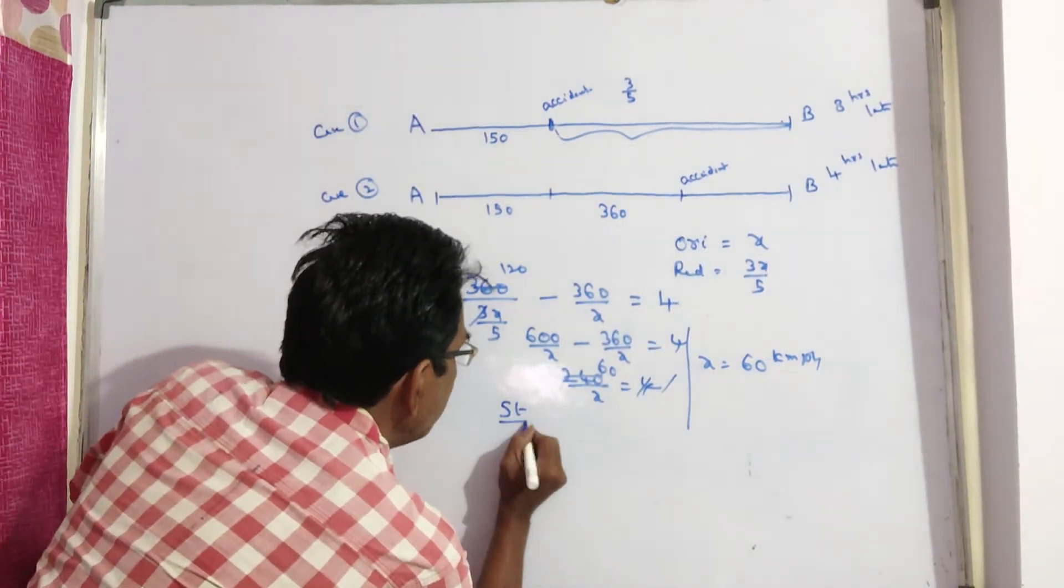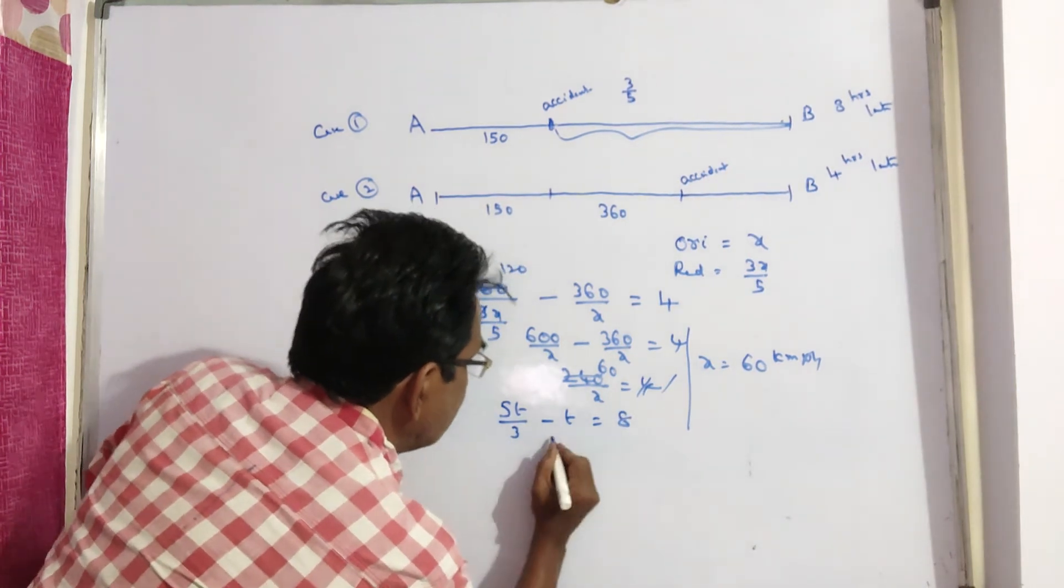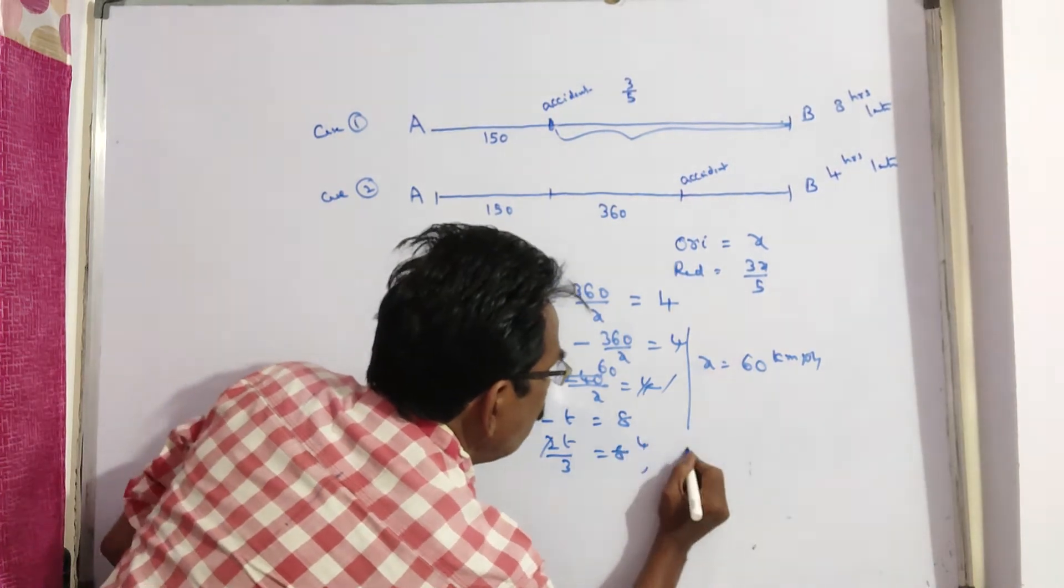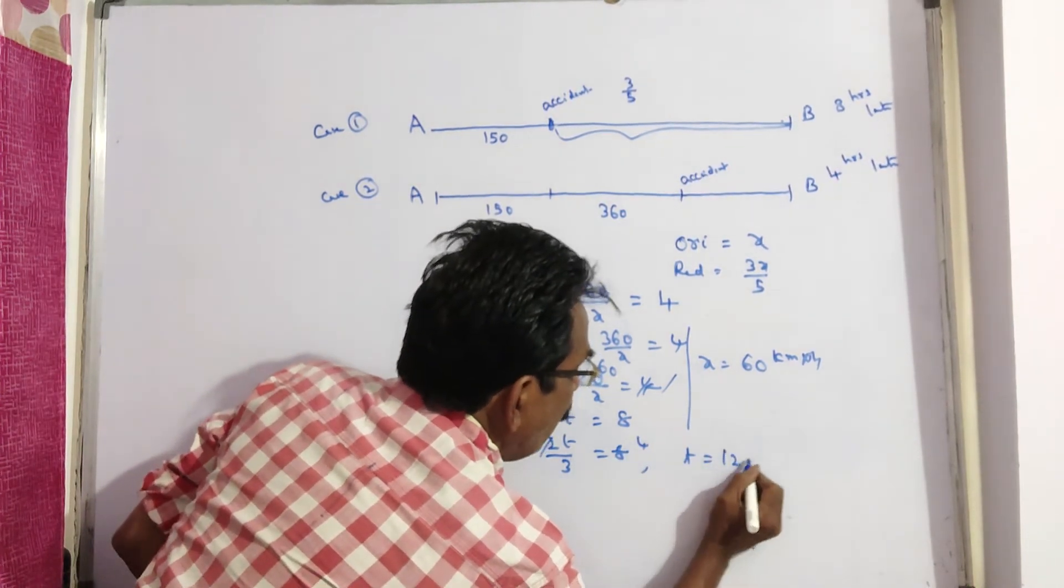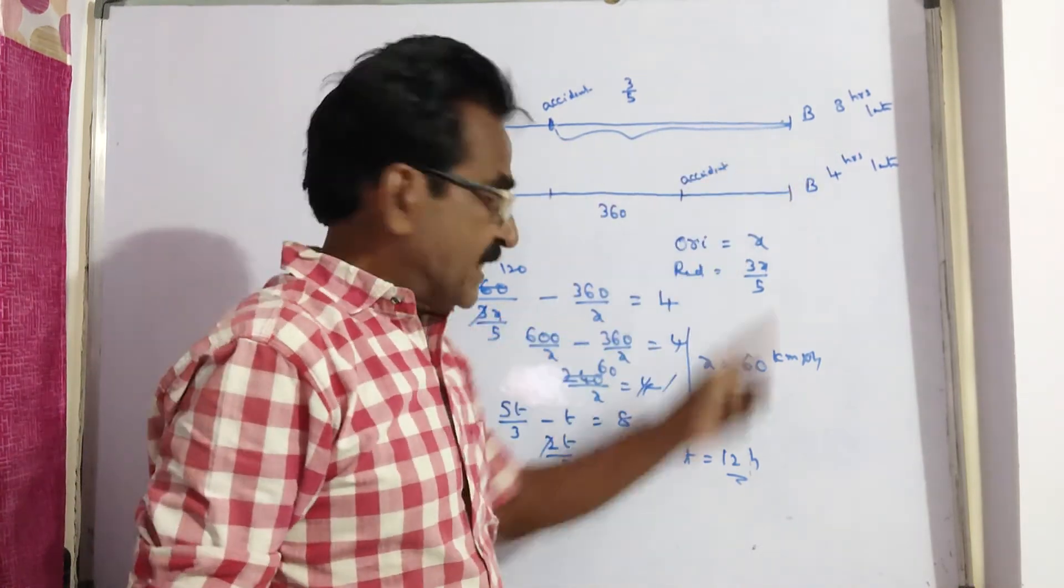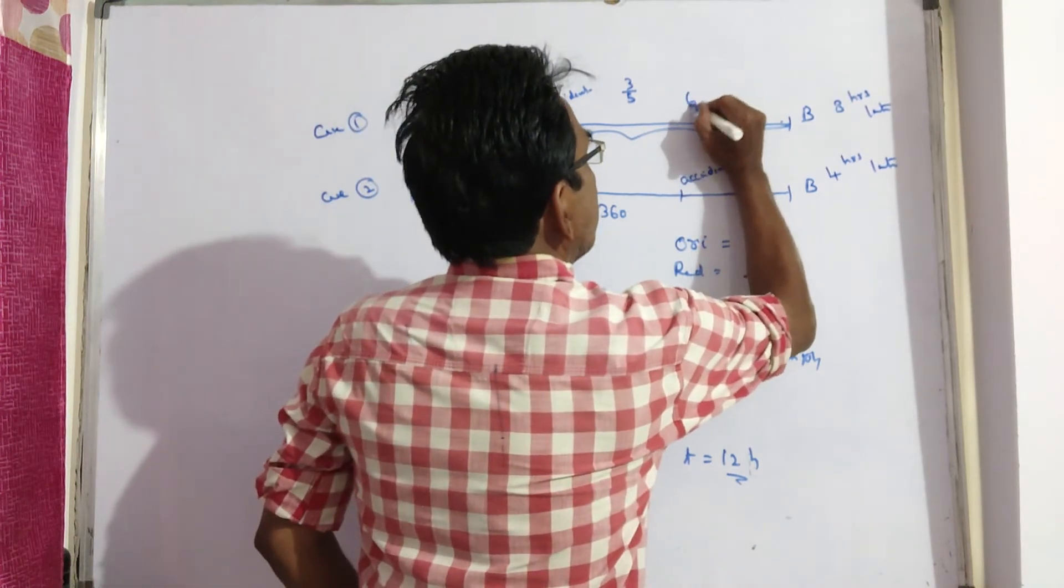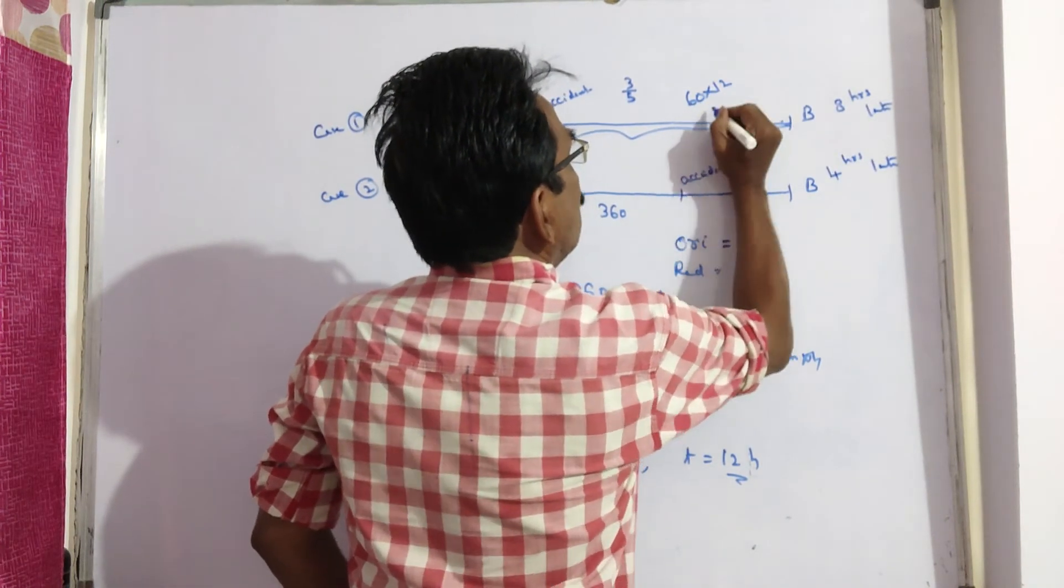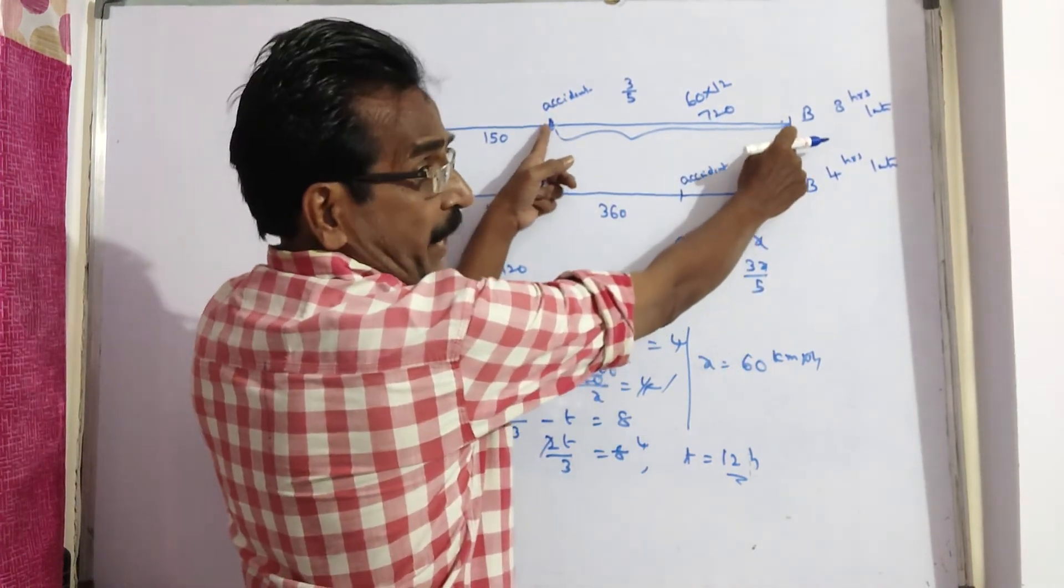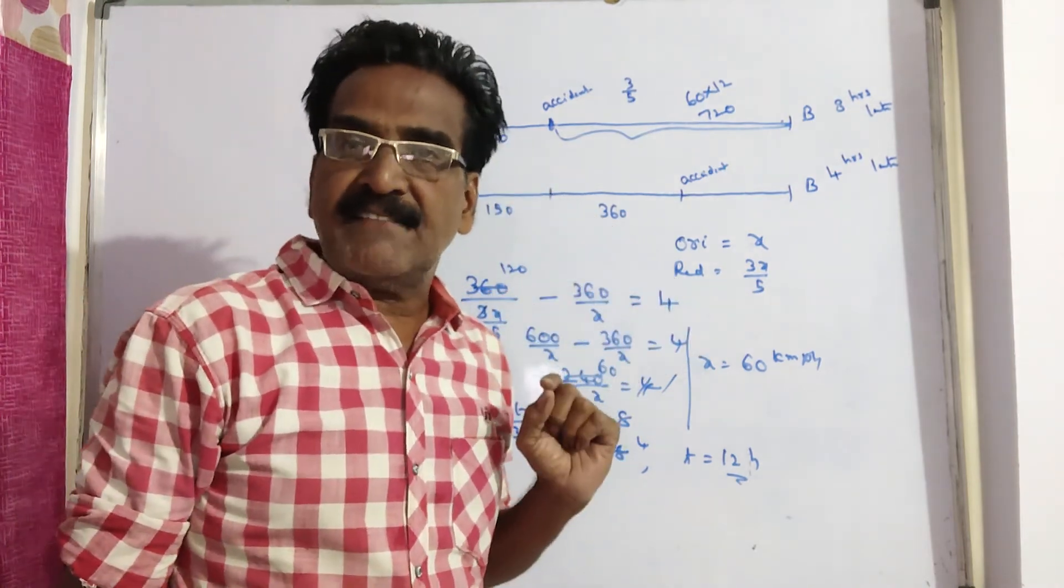So 5t by 3 minus t is equal to 8. 5t minus 3t, 2t by 3 is equal to 8. So t is equal to 12 hours. So if the train travels with usual speed, it takes 12 hours. That means usual speed, we know, 60 into 12 hours, that is equal to 720 km. So the distance between these two points is 720 plus 150. Total distance is 870 km.